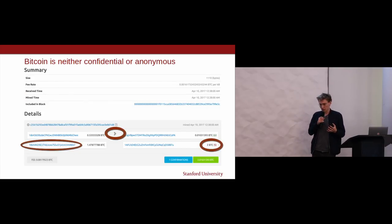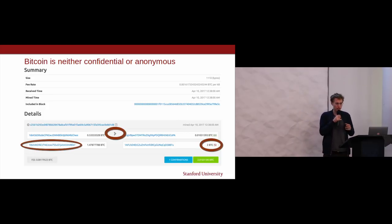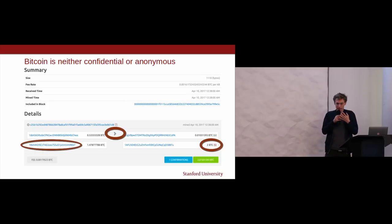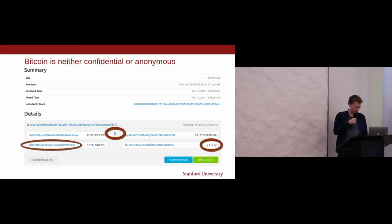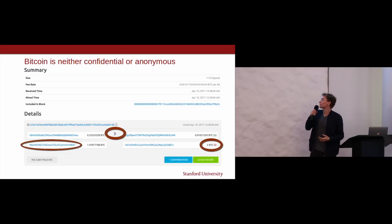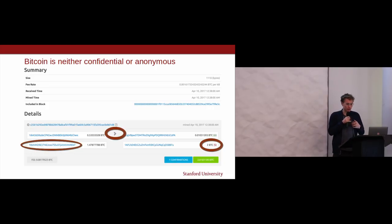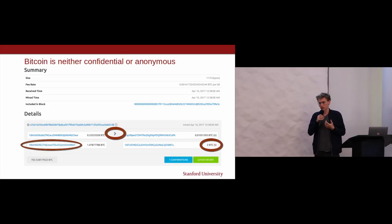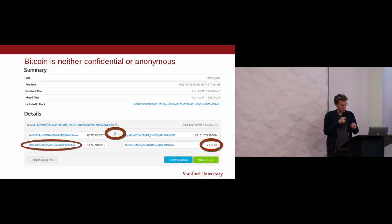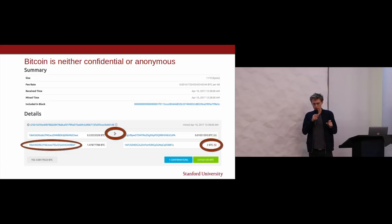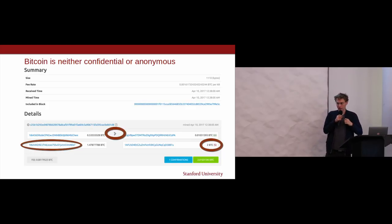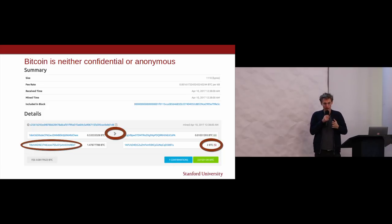Let's talk about privacy in Bitcoin. Bitcoin is neither confidential nor anonymous. Anonymity in cryptographic transactions means the transaction graph is hidden — I cannot tell who is sending to whom. One claim of Bitcoin is that it's anonymous; it's true that from an address you can't tell necessarily who it is, there's no real name. But there's lots of linking, and you can easily link transactions together. There have been many de-anonymization papers, and there are companies that actively try to de-anonymize the Bitcoin network.